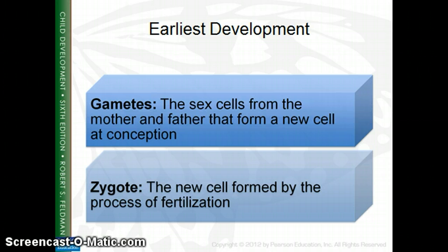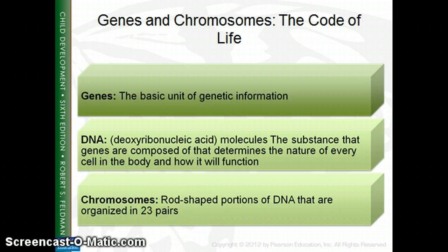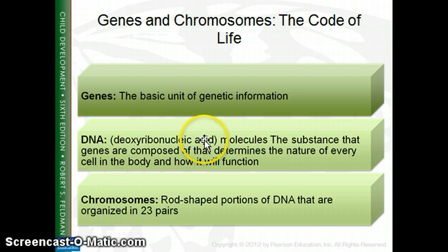The zygote is that new cell formed by the process of fertilization. We have things that make us each unique and make us products of our parents. Our genes are composed of a sequence of DNA, which is deoxyribonucleic acid.